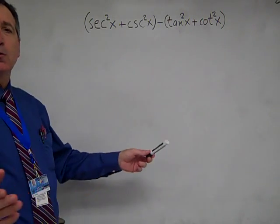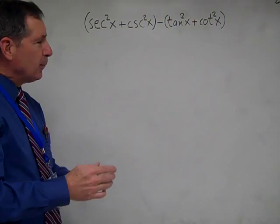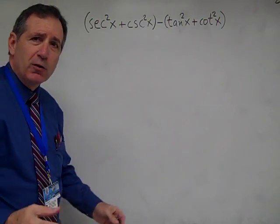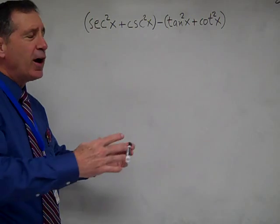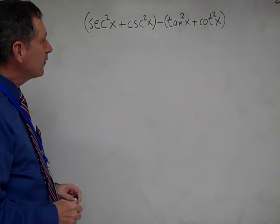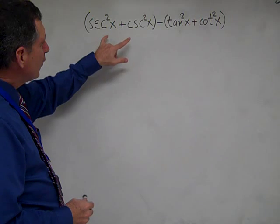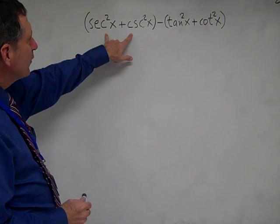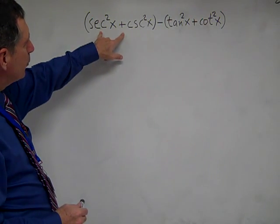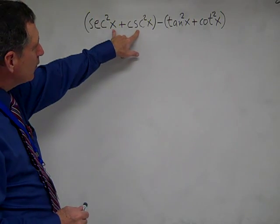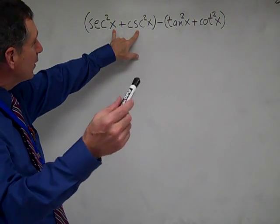We're going to make use of trigonometric identities for this. Basically, you don't know exactly where it's going to go, so you just try different things. One thing we're going to do first is use our reciprocal identities to put secant squared x and cosecant squared x in terms of sine and cosine.